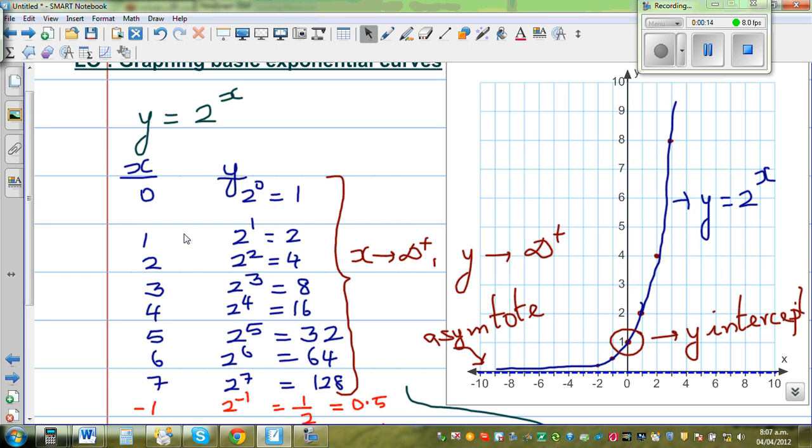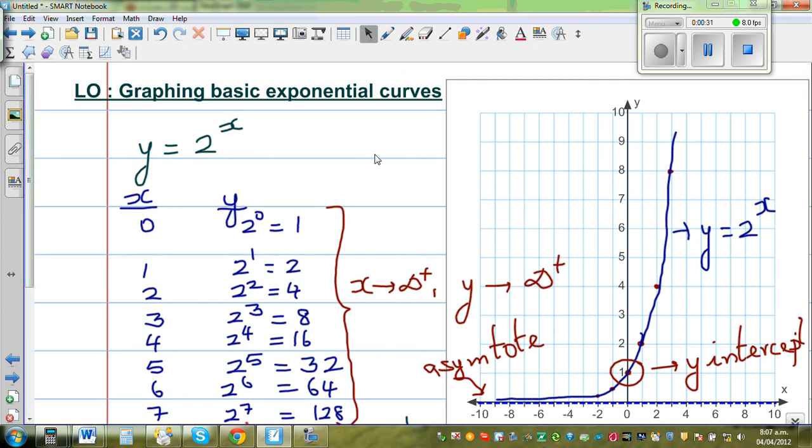So when you graph this, we saw these values from positive values of x. We could say when x is approaching positive infinity, even if you don't want to go to positive infinity, when x is approaching say even 20 or 30, y will be approaching an astronomical figure. And that's why it's called an exponential curve.